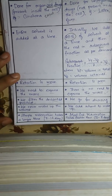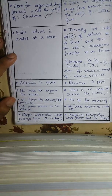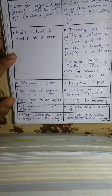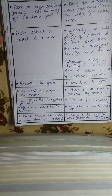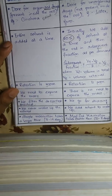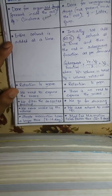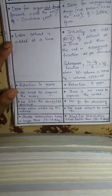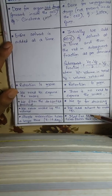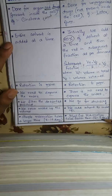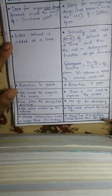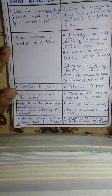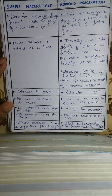Simple maceration takes a longer time — 7 to 14 days — because of higher retention in the cells. Modified maceration is faster and is completed within 2 to 7 days.